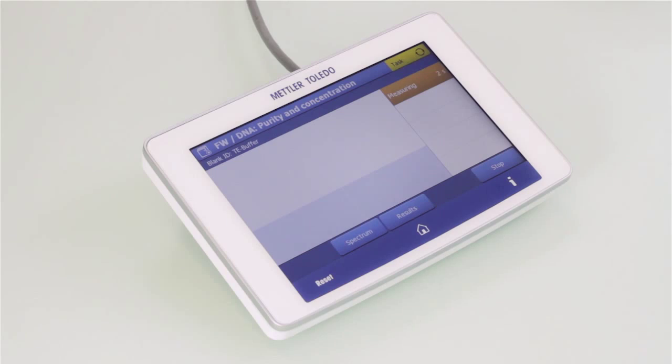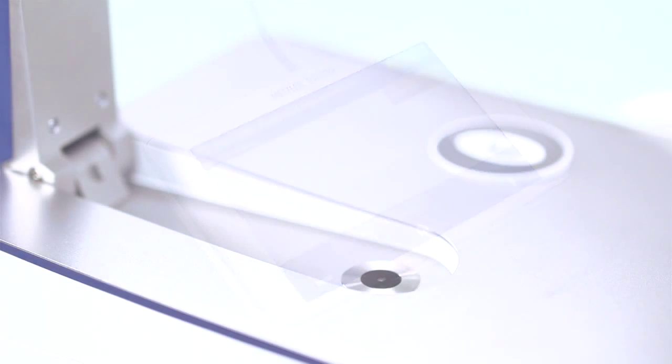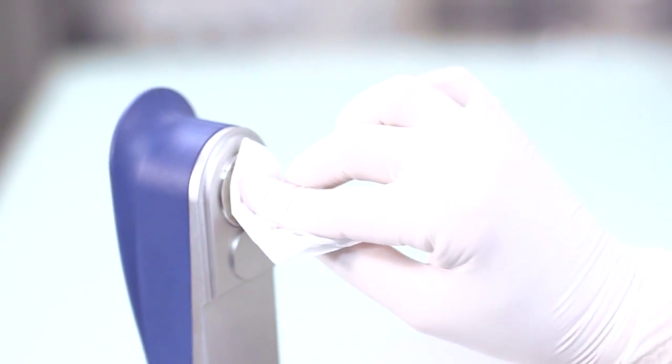After closure of the arm, the blank is automatically measured. Both the surfaces of the microvolume platform and the reflecting mirror can be easily cleaned with a tissue paper.